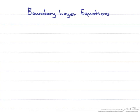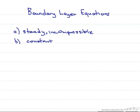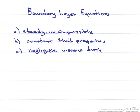Boundary layer equations are difficult to solve, but in the case of laminar flow, an analytical solution can be found using a similarity solution. However, the following assumptions need to be made. In order to solve, we have to assume steady, incompressible flow. We also have to assume that the fluid properties are constant, as well as negligible viscous dissipation. And finally, we have to assume that dp/dx equals 0.